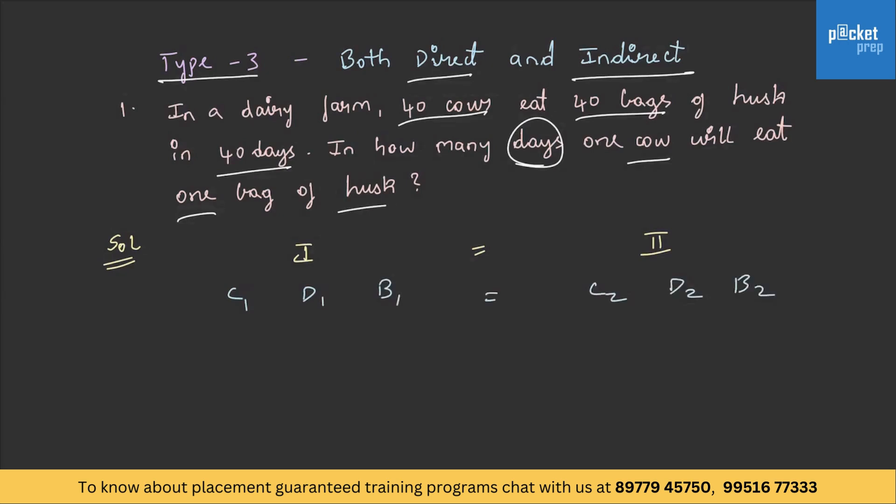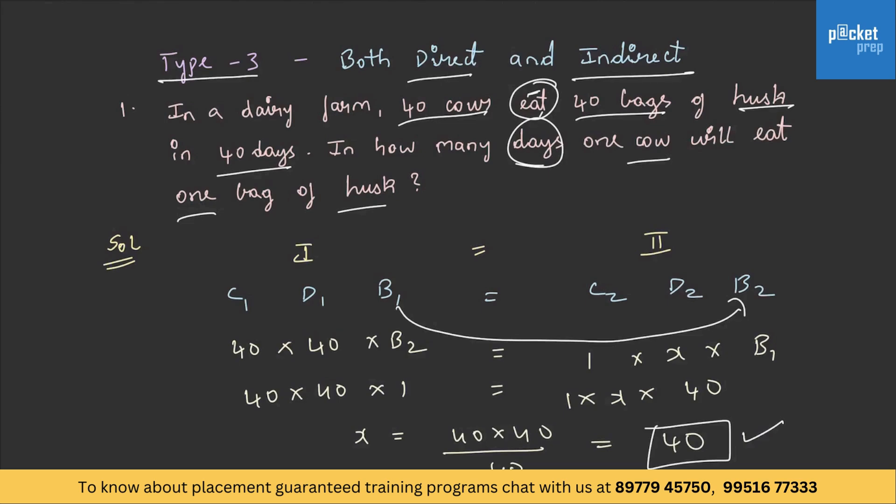Here you can find 40 cows eating 40 bags of husk, so eating is a work, therefore we need to interchange these values. Now 40 cows in the first statement and 40 days and here it will be B2. Similarly 1 cow in the second statement and we have to find out the number of days, and here you will be getting B1. Now this becomes 40 into 40 into number of bags in the second statement is 1, and 1 into X into number of bags in the first statement is 40. Therefore X is equal to 40 into 40 by 40, therefore the value of X is 40. This might be an easy question, but I have solved this to make you understand the concept.